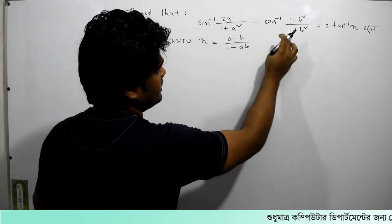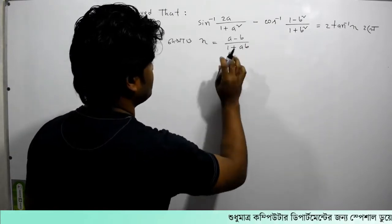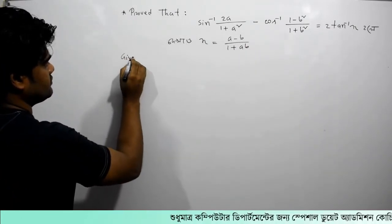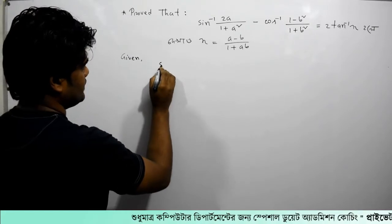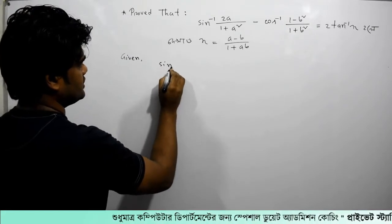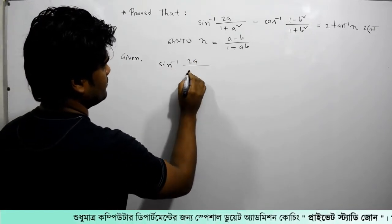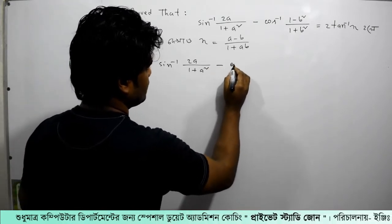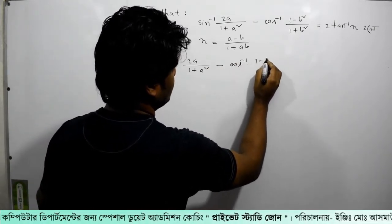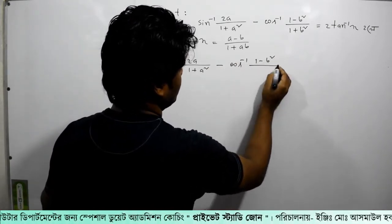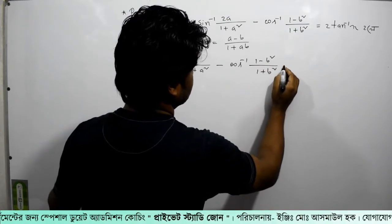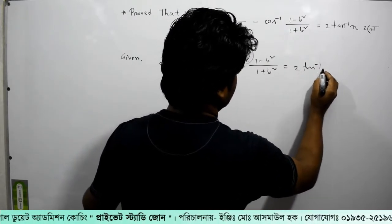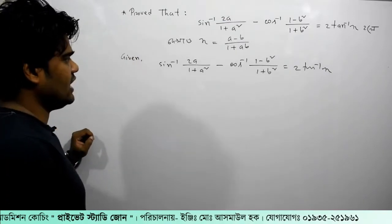So let's start with the given data. Here we go: sin inverse 2a divided by 1 plus a square, minus cos inverse 1 minus b square divided by 1 plus b square, equals 2 tan inverse x.